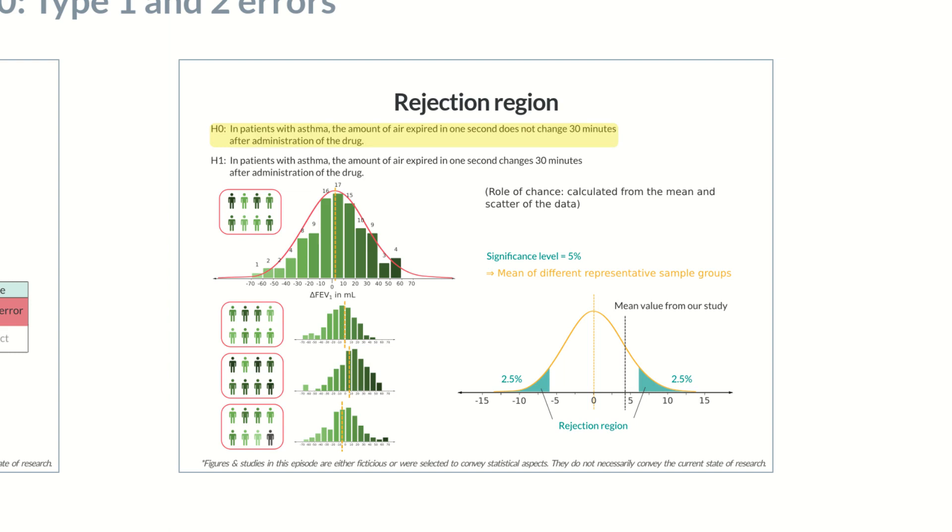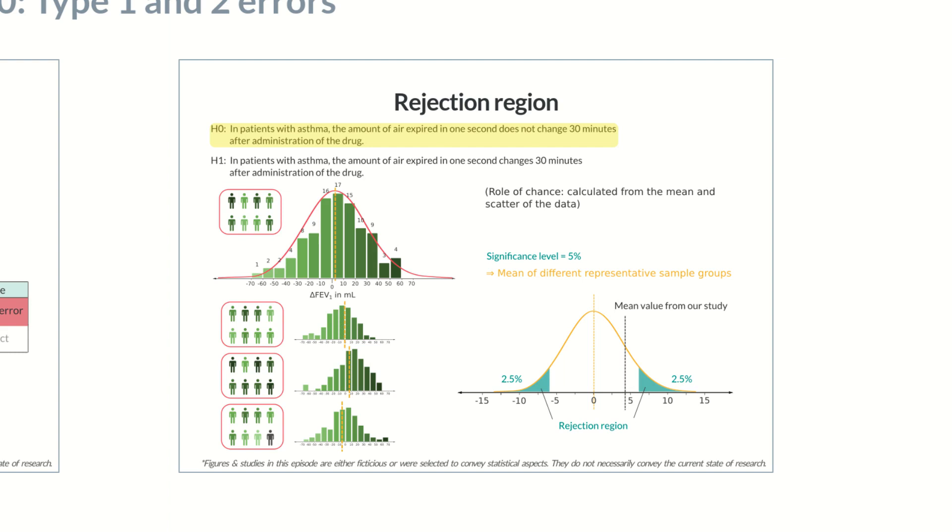However, the rejection region isn't the only instrument of assessing whether a null hypothesis should be rejected or accepted. Would you like to know how the p-value can be used to achieve this? Then stay tuned for part 11 of our Chalk Talk series on statistics.